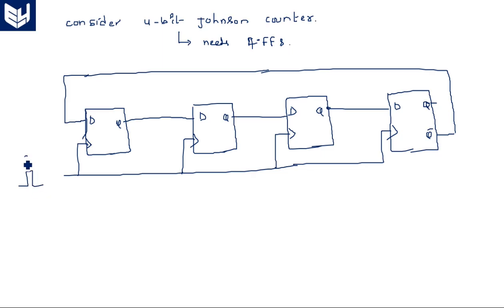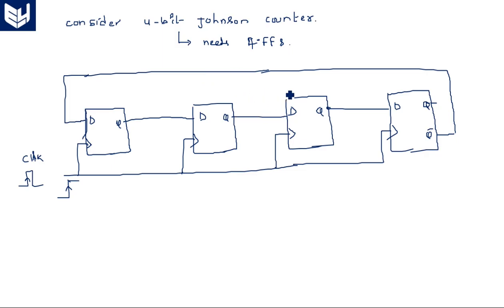A common clock pulse is given to all flip-flops so that they are synchronous with each other. Whenever a rising edge of the clock occurs, every flip-flop gets activated and the input is transferred to the output. This process repeats for any number of clock pulses applied. This is the first, second, third, and fourth flip-flop.